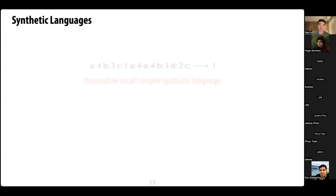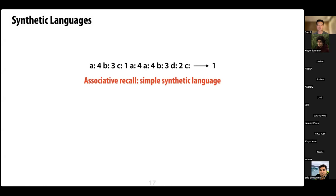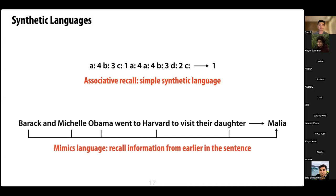One synthetic language we looked at is called associative recall. It's a simple task where keys and tokens have a unique mapping in each sequence, and the language model just has to recall the correct output. For example, if letter C is associated with key 1, then at the end when the model sees C again it has to output 1. This mimics in-context learning, where you recall information from earlier — like needing to recall 'Barack, Michelle Obama, Harvard, daughter' to predict 'Malia.'